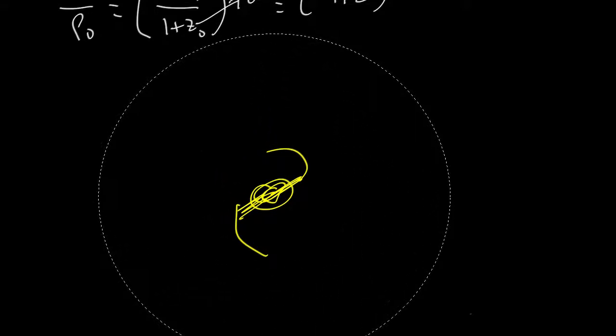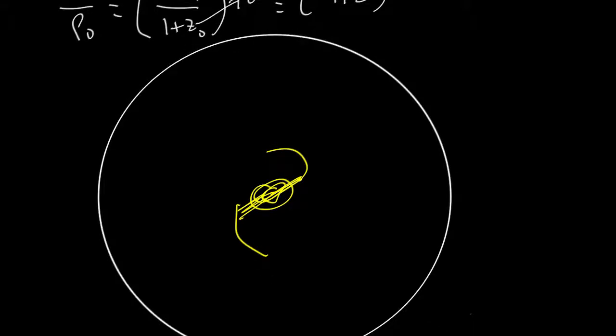Let's just do a 2 megaparsec circle. So 2 megaparsecs in radius. What do we see?